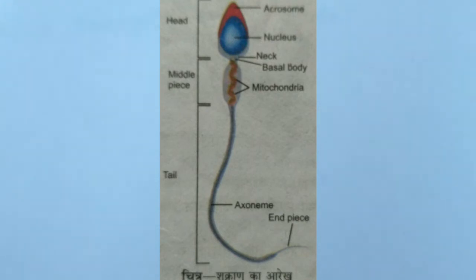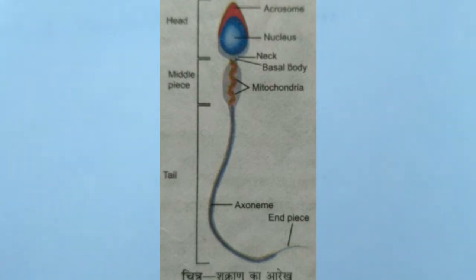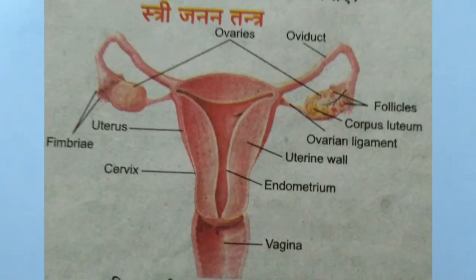The spermatozoa diagram is very important. Practice the sperm diagram carefully, making sure all labels and structures are correctly identified.